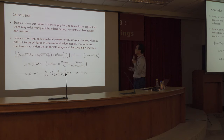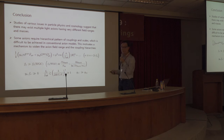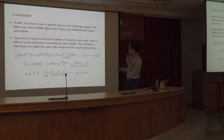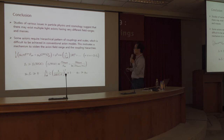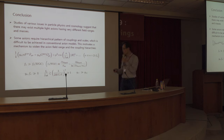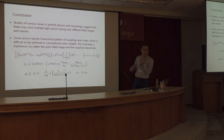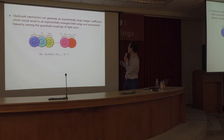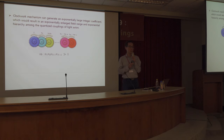This is the unique feature of the clockwork model. To conclude: studies of various issues in particle physics and cosmology suggest that there may exist multiple light axions with very different field ranges, masses, and couplings. Some axions require hierarchical patterns of couplings and scales which are difficult to achieve in conventional axion models. This motivates mechanisms to enhance the axion field range and generate hierarchies among different axion couplings — particularly in axion-photon coupling, axion-gluon coupling, axion-Higgs coupling, and the relation between the axion field range and the swampland conjecture bound. The clockwork mechanism can achieve all of this, resulting in an exponentially enlarged field range and an exponential hierarchy among axion couplings.